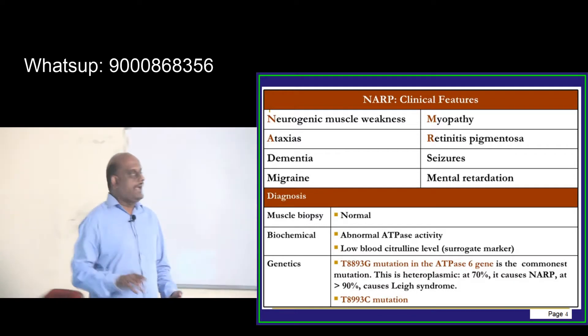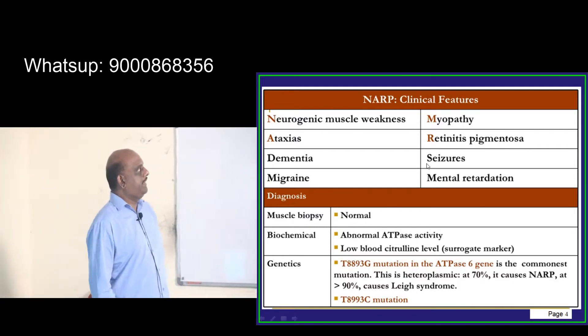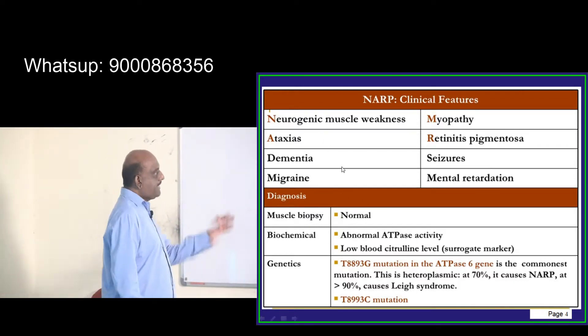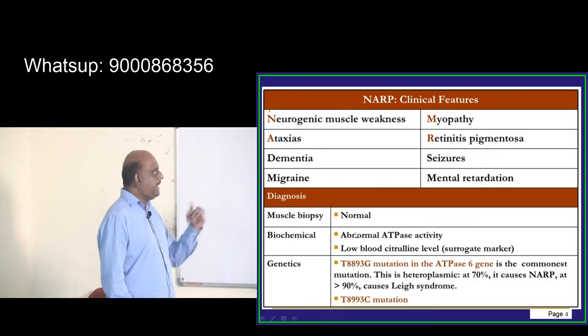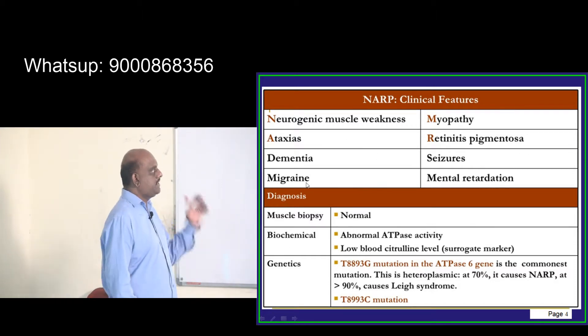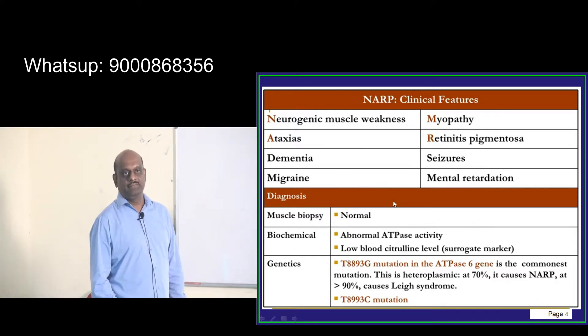The features include neurogenic muscle weakness (myopathy), ataxia, retinitis pigmentosa, dementia, seizures, migraine, and mental retardation.